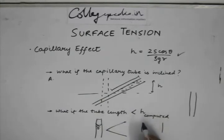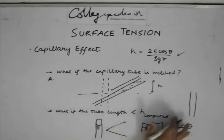The enlarged view is something like this. This angle, the new contact angle say theta1, theta1 is not going to be the same as theta. Rather, theta1 will be greater than theta. This is what is going to happen if the tube length is less than h computed.